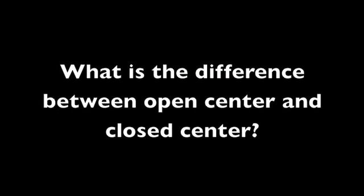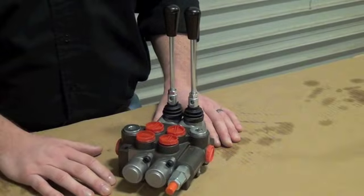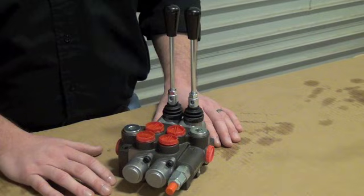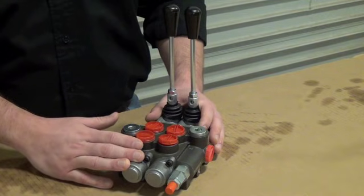What is the difference between open center and closed center? In an open center valve, the flow from the pump is allowed to pass through the valve and return to the tank when the valve is not in use. These types of valves are most commonly used with fixed displacement pumps like gear pumps.